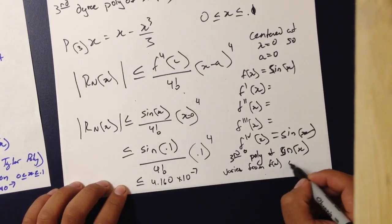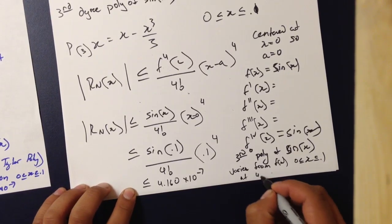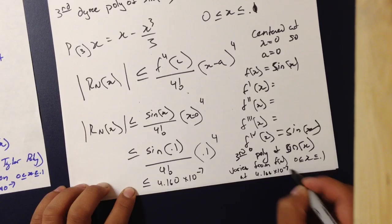on 0 to 0.1 by, at most, 4.160 times 10 to the negative seventh.